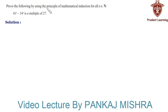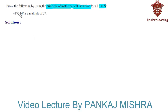Prove the following by using the principle of mathematical induction for all n belonging to natural numbers. In this question we have a statement: 41 raised to n minus 14 raised to n is a multiple of 27, and we need to prove it by using the principle of mathematical induction. So let's begin with the solution.